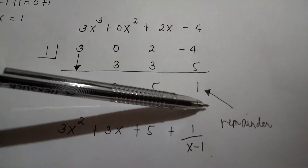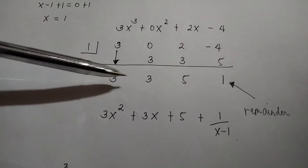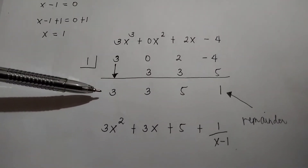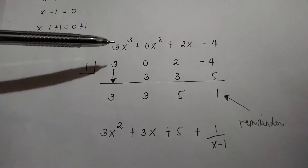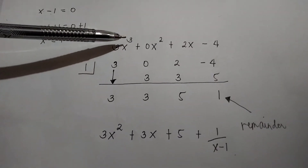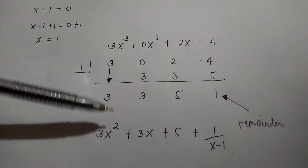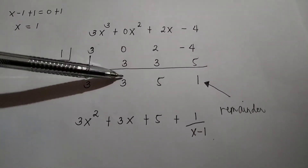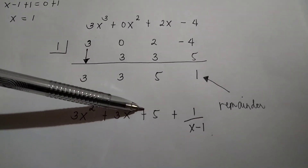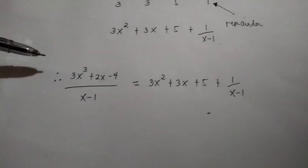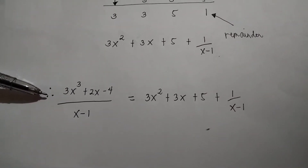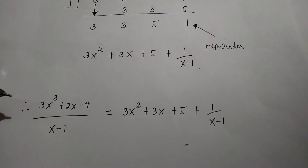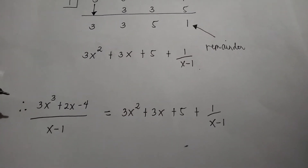So 1 is the remainder. The coefficients now are 3, 3, 5, and 1 — these become the coefficients of your quotient. The degree of the dividend is 3, so subtract 1, that becomes 2. So the answer is 3x squared plus 3x plus 5 plus 1 over x minus 1. Therefore, 3x cubed plus 2x minus 4 divided by x minus 1 equals 3x squared plus 3x plus 5 plus 1 over x minus 1.